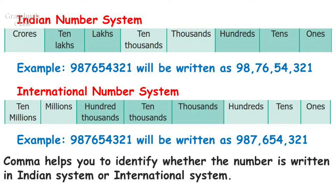As you can see, only with the help of commas we come to know whether the number is in the Indian system or in the international system. In the Indian system, the first comma appears before hundreds, the second one appears before 10,000s, and the third comma is placed before 10,000s, thus marking hundreds, thousands, lakhs and crores. Whereas in the international system, the first comma appears before hundreds, the second comma appears before hundred thousands, and the third one comes before hundred millions, thus marking thousands, millions and billions.